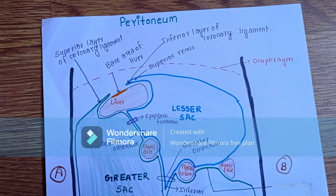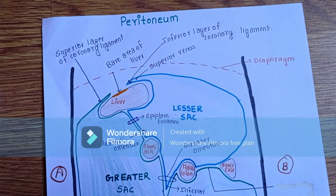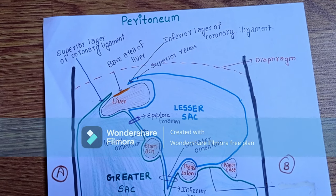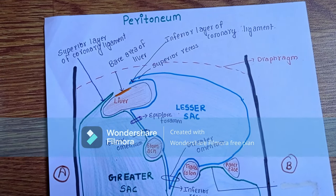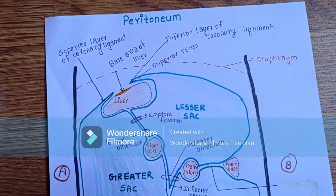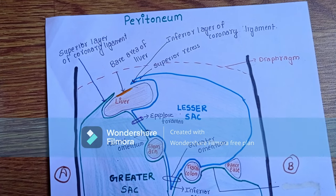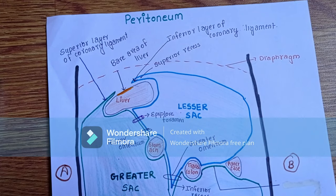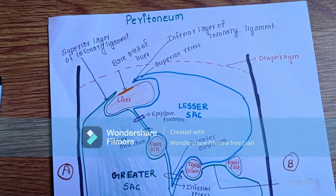Peritoneum is in the form of a closed sac which is invaginated by numbers of viscera. Talking about its division, it has two divisions which are parietal peritoneum and visceral peritoneum.